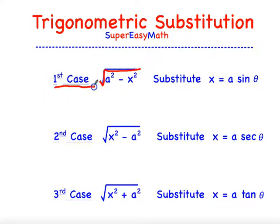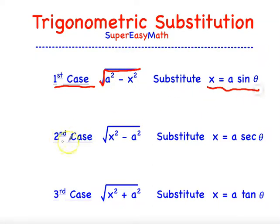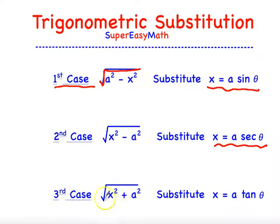We have three different cases. The first one is the form radical (a² − x²); we substitute x = a·sinθ. The second case is radical (x² − a²); substitute x = a·secθ. And the third case is radical (x² + a²); substitute x = a·tanθ.